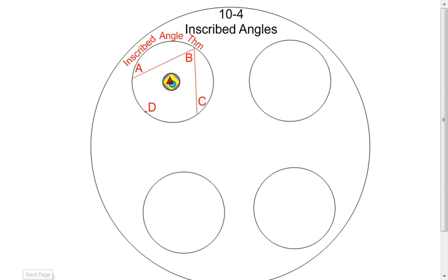So on my next slide, I have that in equation format. To find the measure of the inscribed angle, take half of the measure of the intercepted arc. And to find the measure of the intercepted arc, take two times the measure of the inscribed angle.